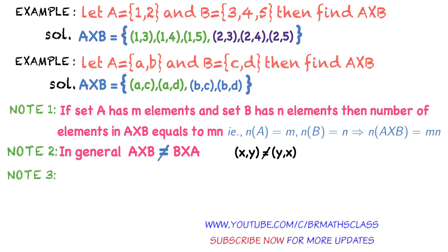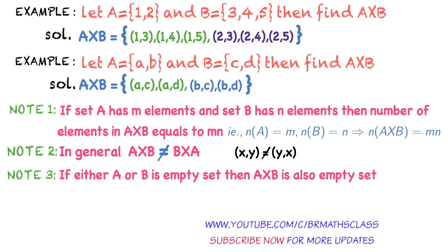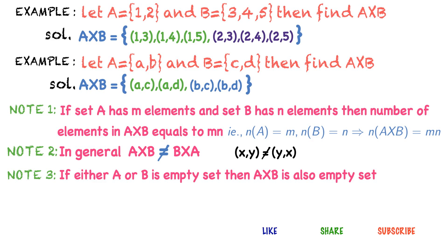Point three: If either A or B is an empty set, then A cross B is also an empty set. While calculating A cross B, if either set A or set B is empty, then A cross B is also empty. You can check this: take set A as a non-empty set and set B as an empty set, and you will get A cross B as an empty set.